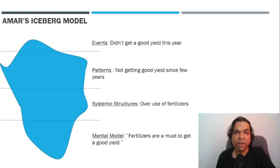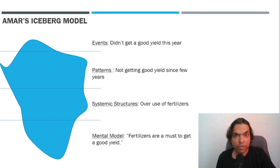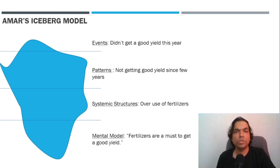In the story of the farmer and his friend that we covered in episode 1, we saw how Rohan helped Amar by making him realize the root cause of the problem. At the event level, Amar was able to observe the poor yield that he got that year. At the patterns level, he saw that he keeps getting poor yield no matter what solution he tries. At the structure level, he saw that the poor yield was coming because of the overuse of fertilizers. At the mental model level, he could understand that it is okay to use fertilizers.